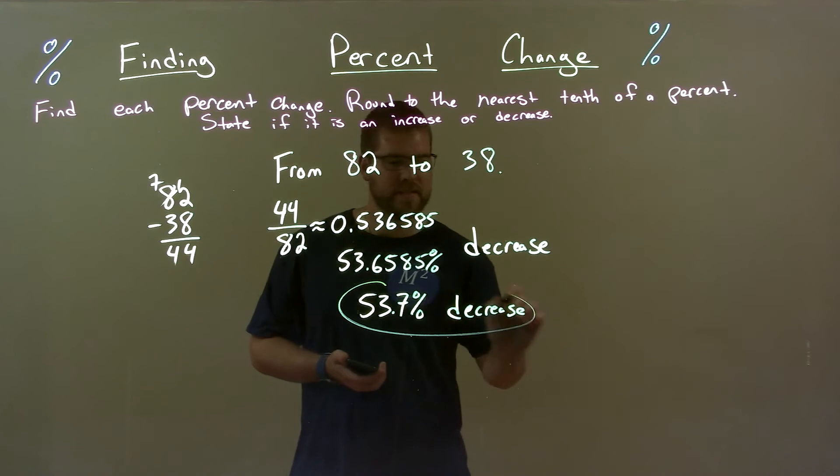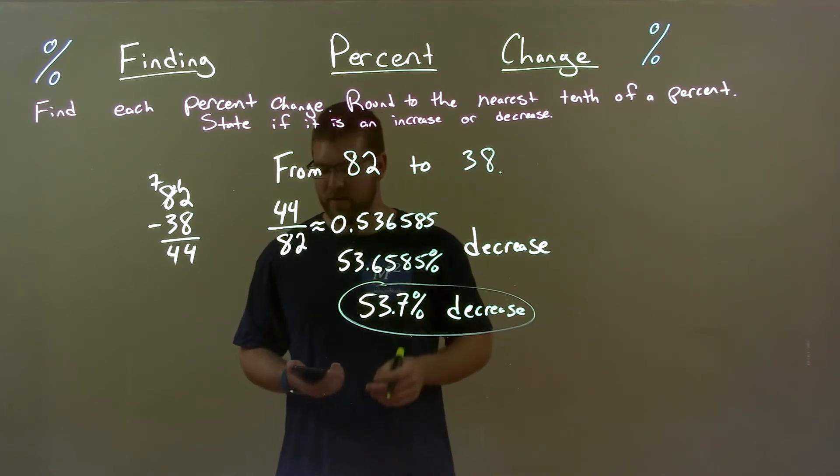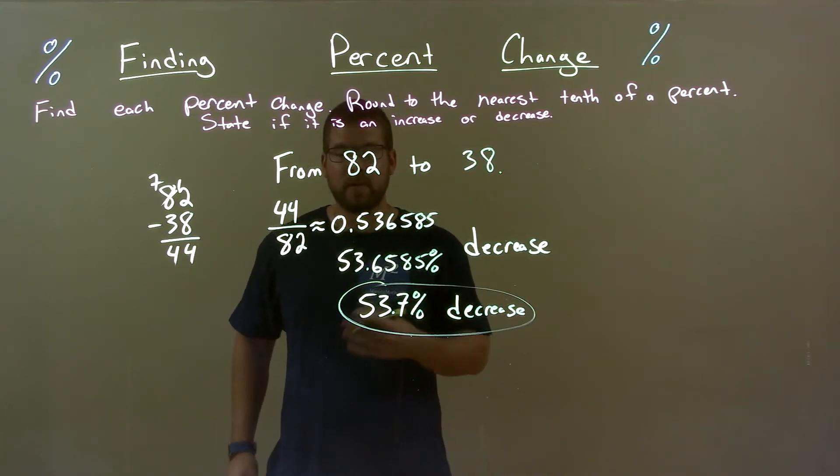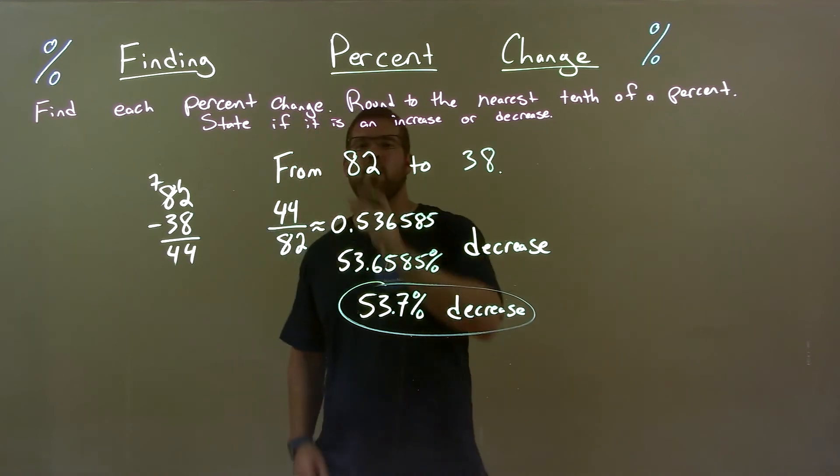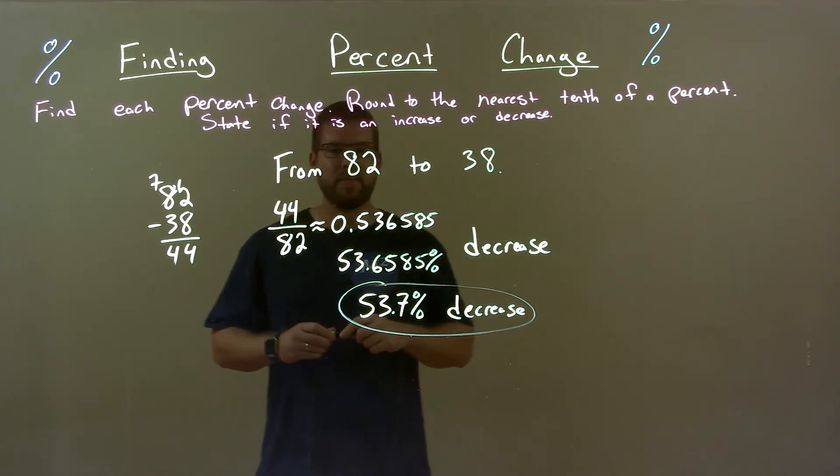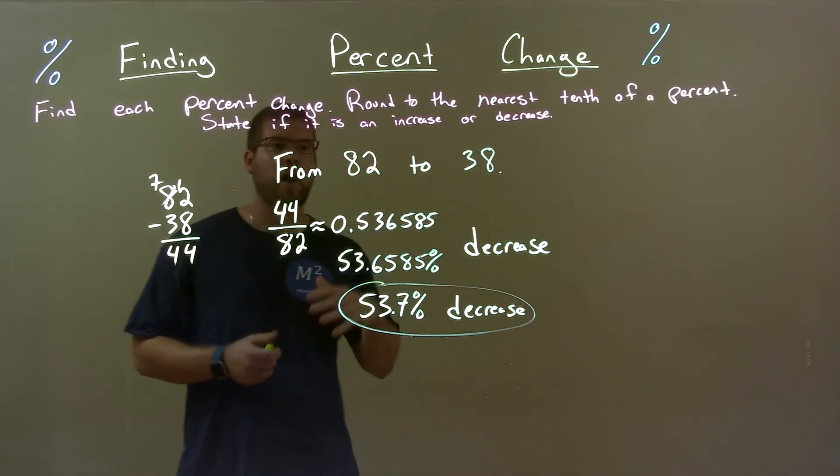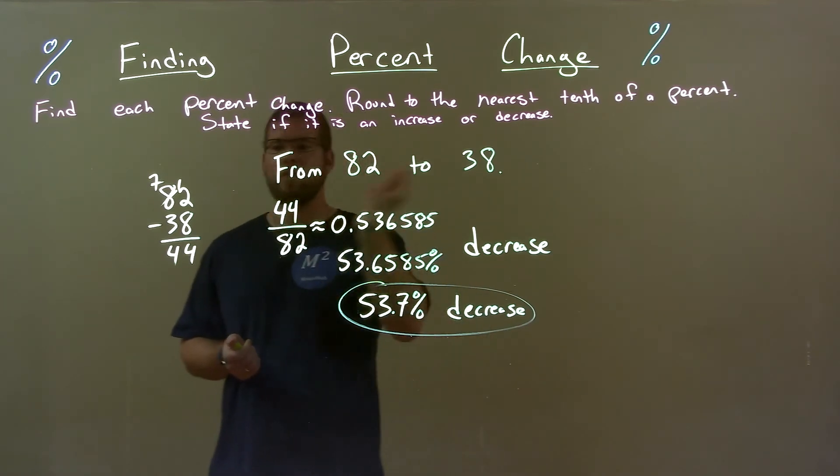And so we have 53.7% decrease as our final answer. So quick recap. We're given from 82 to 38, and we have to find that percent. What is that decrease? Found the difference between the two.